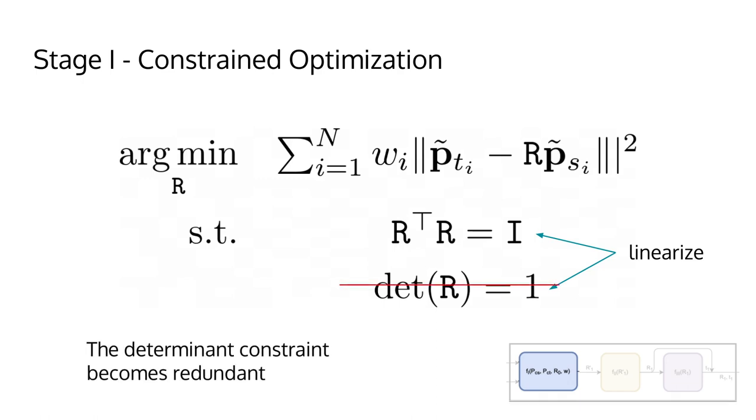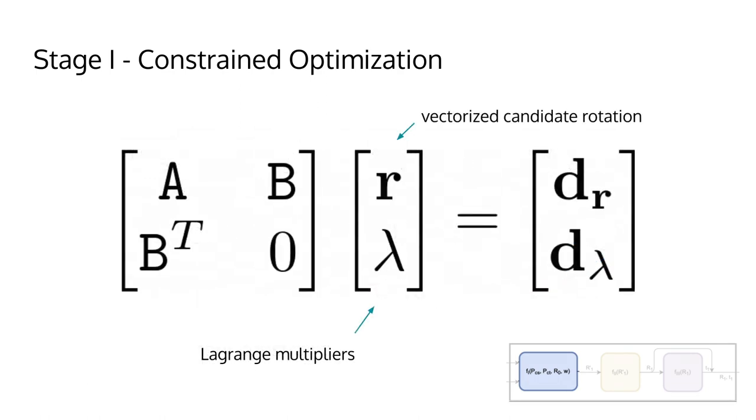However, after linearization, the determinant constraint is no longer linearly independent with respect to the orthogonality constraints, and is therefore redundant. After employing the method of Lagrange multipliers to our optimization problem, we end up with a linear system of equations that has a closed-form solution. In this equation, the variable R represents a column-wise vectorized version of the rotation matrix and lambda the vector of Lagrange multipliers coming from the orthogonality constraints.